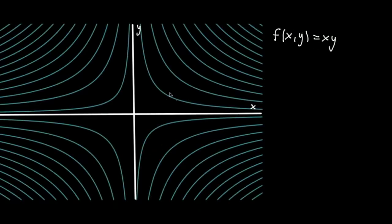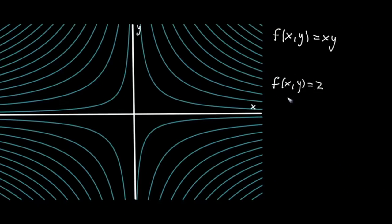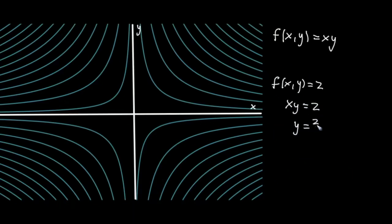Each one of these lines represents a constant value. The constant value for f of x times y equals two would be one of these lines. A way you could think about that for this specific function is when is x times y equal to two? That's kind of like the graph y equals two over x. So all of these lines are representing constant values for the function.